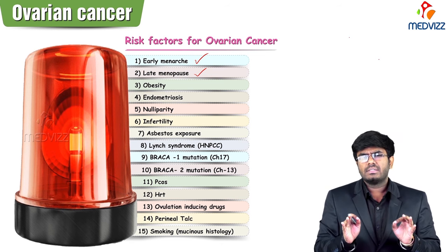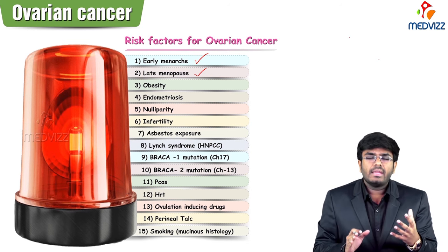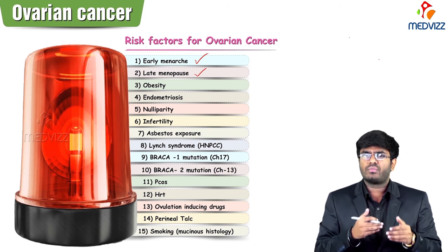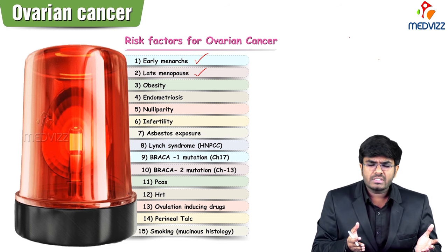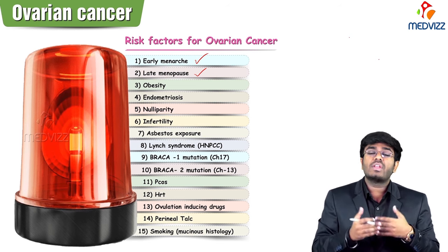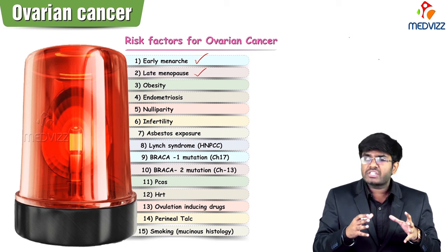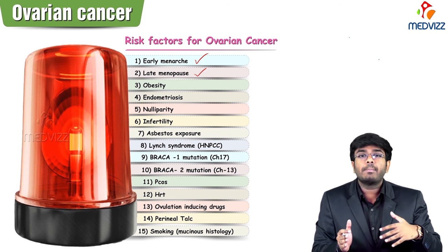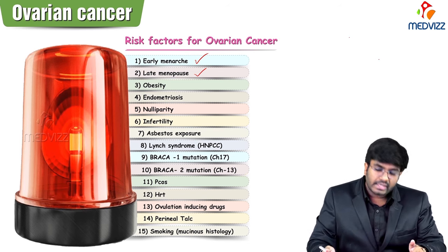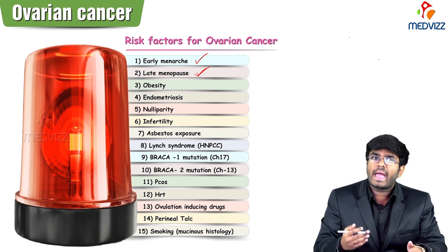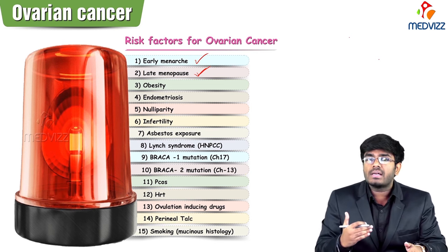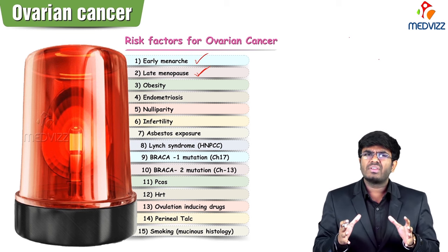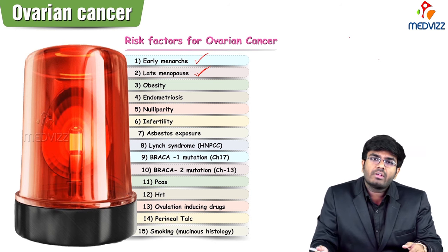Early menarche means the female starts her menstrual cycle at a very young age — for example, starting at 8 or 10 years instead of 14 or 15. That gives 4 extra years of ovarian function and ovulation, stressing the ovary. The same concept applies to late menopause: if menopause occurs at 58 instead of 50, there are 8 extra years of ovarian function, which can stress the ovary and lead to ovarian cancer.